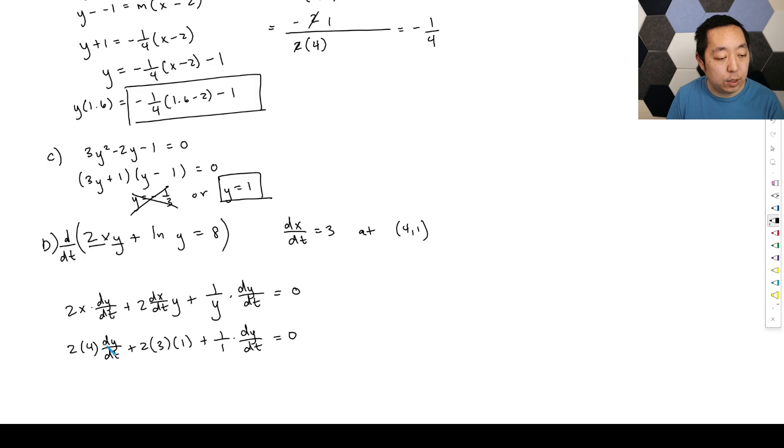Plus one over one dy dt equals zero. This is going to be eight dy dt's and one dy dt's. That's nine dy dt's plus, and then this is six equals zero. So then dy dt is going to be minus six over nine, which you can just leave it at, or just if you want to do the simplification, it's minus two over three. Like that.